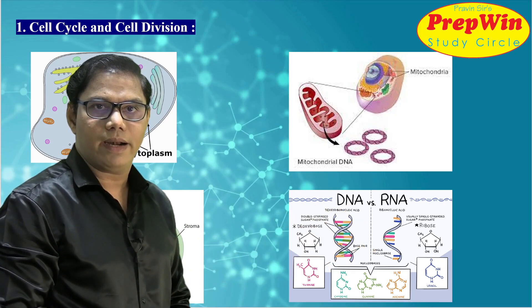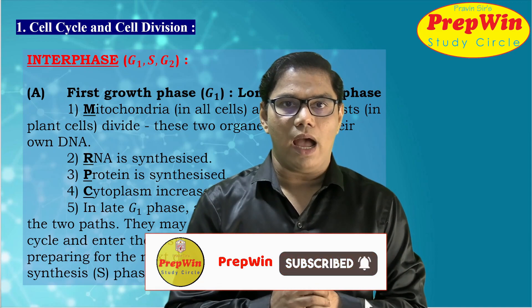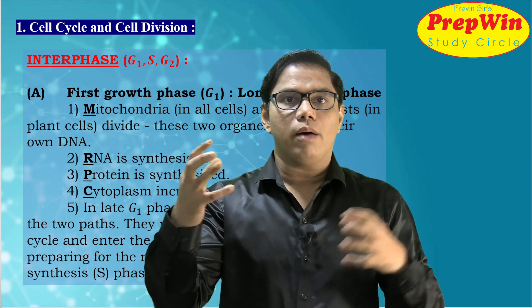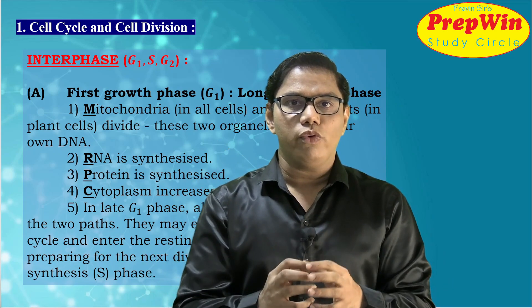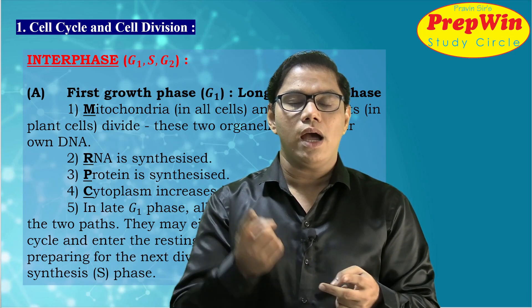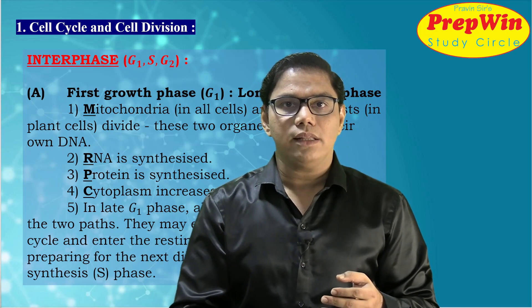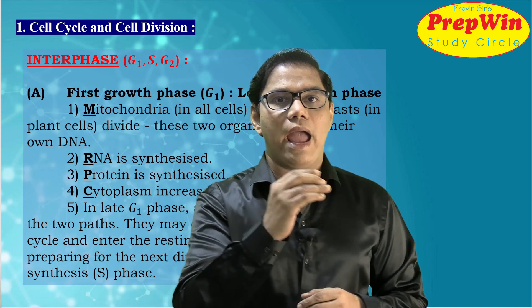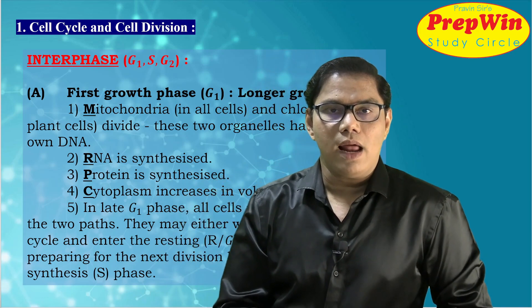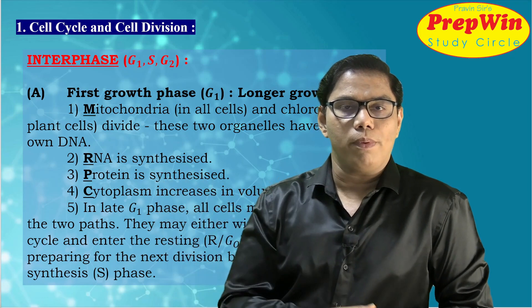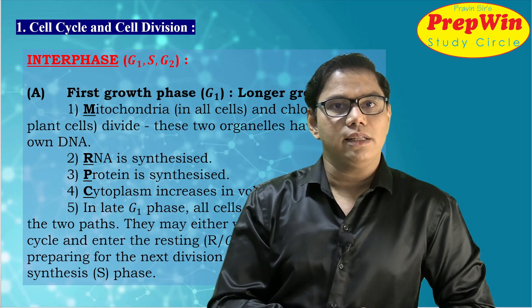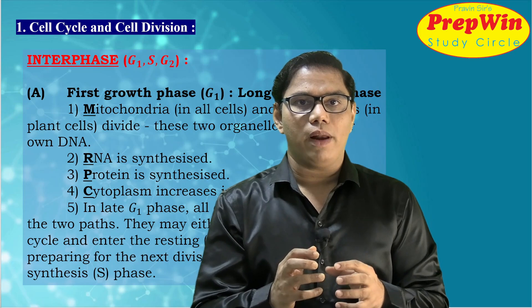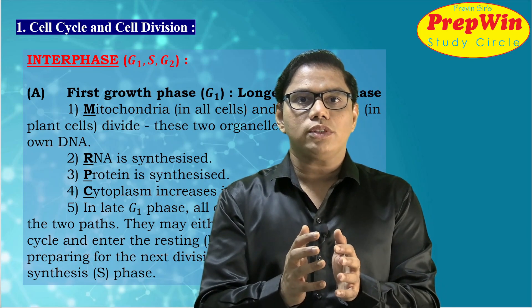During the G1 growth phase, synthesis happens — combining different components to form a new component. During G1 phase: synthesis of mitochondria, synthesis of chloroplast, protein synthesis, RNA synthesis, and cytoplasm synthesis happens. You can remember this for your exam using the mnemonic Mr. PC: M for mitochondria and chloroplast, R for RNA synthesis, P for protein synthesis, and C for cytoplasm. As cytoplasm increases, the cell becomes a little bigger in size.